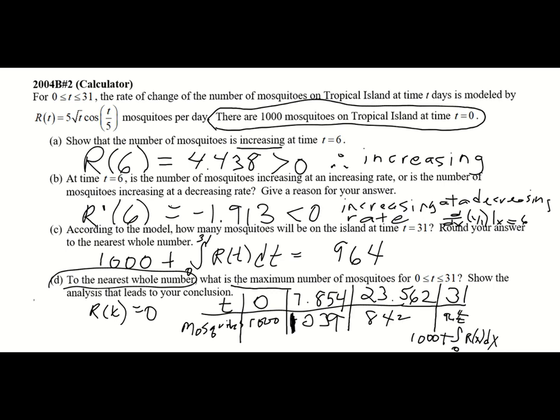The maximum number of mosquitoes is 1,039 — you must indicate your answer clearly; you cannot just assume the table speaks for itself. Also, from this same table, the absolute minimum number of mosquitoes is 842, occurring at T equals 23.562. That question could have been answered just as easily with the same work.